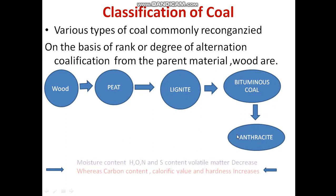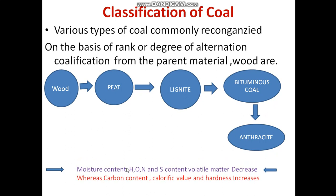What will happen? The moisture, hydrogen, oxygen, nitrogen, sulfur, and volatile matter — they will all decrease. Then what will increase? Carbon content, calorific value, and hardness all increase from peat to anthracite.